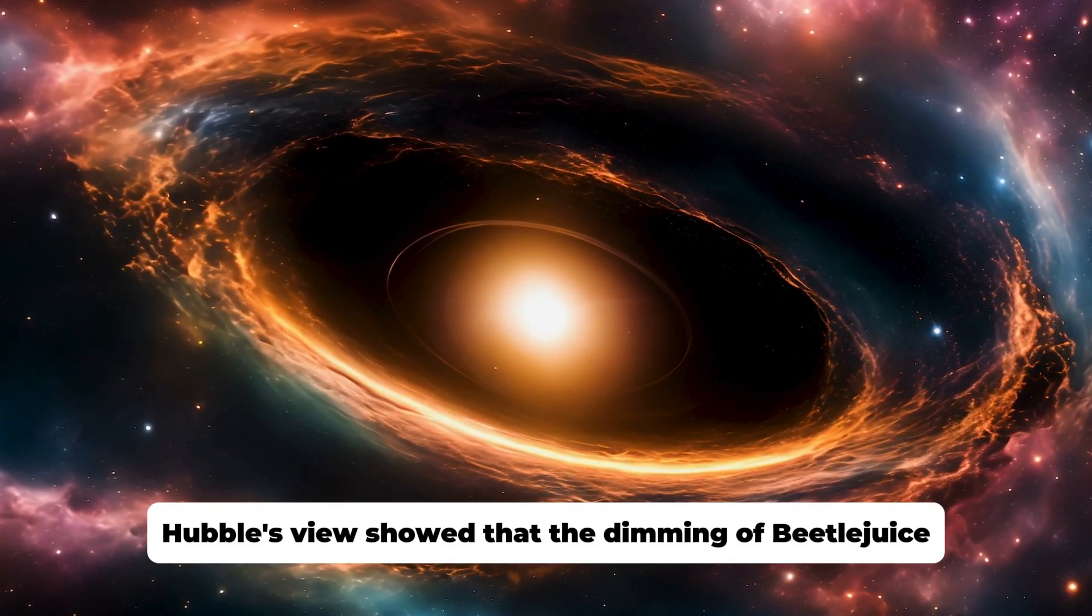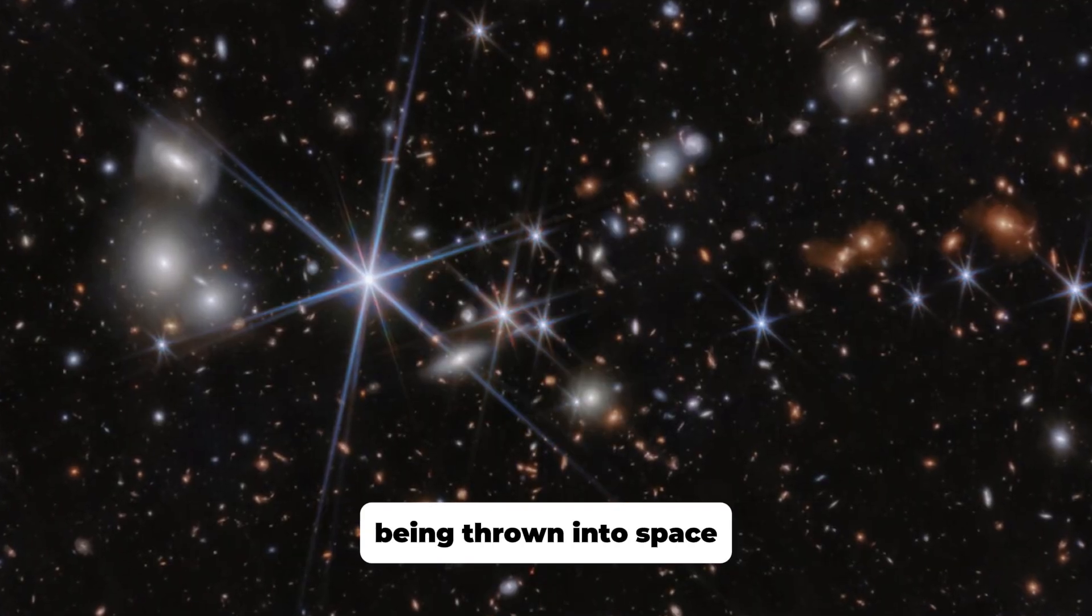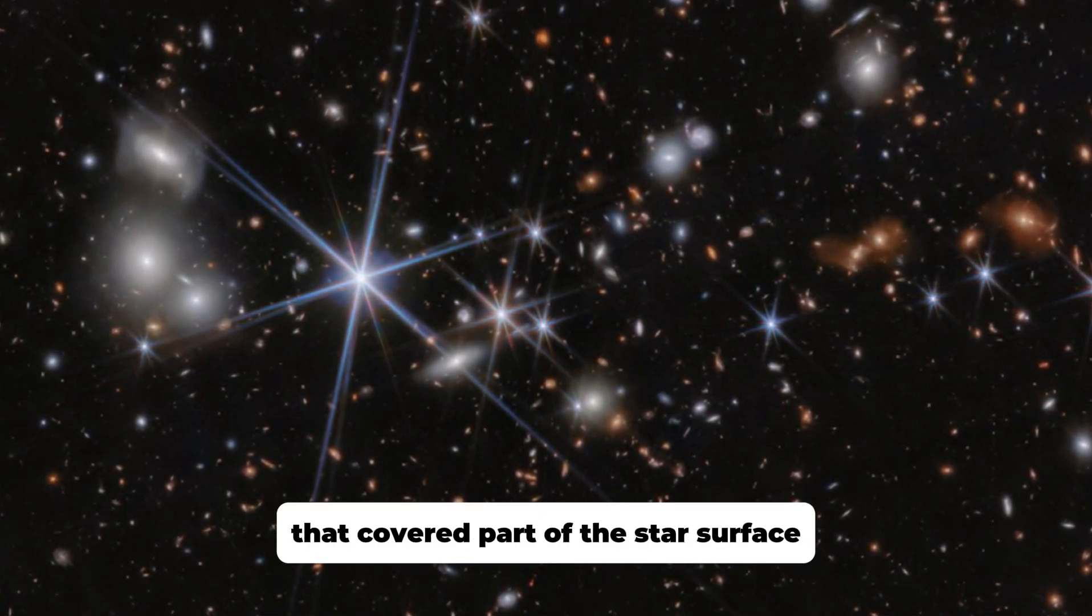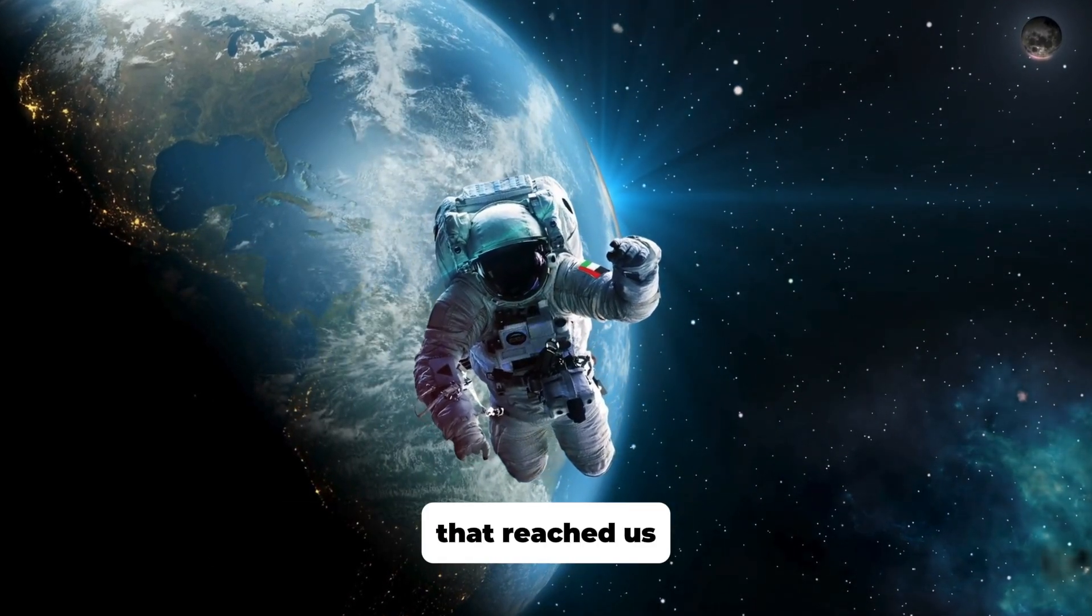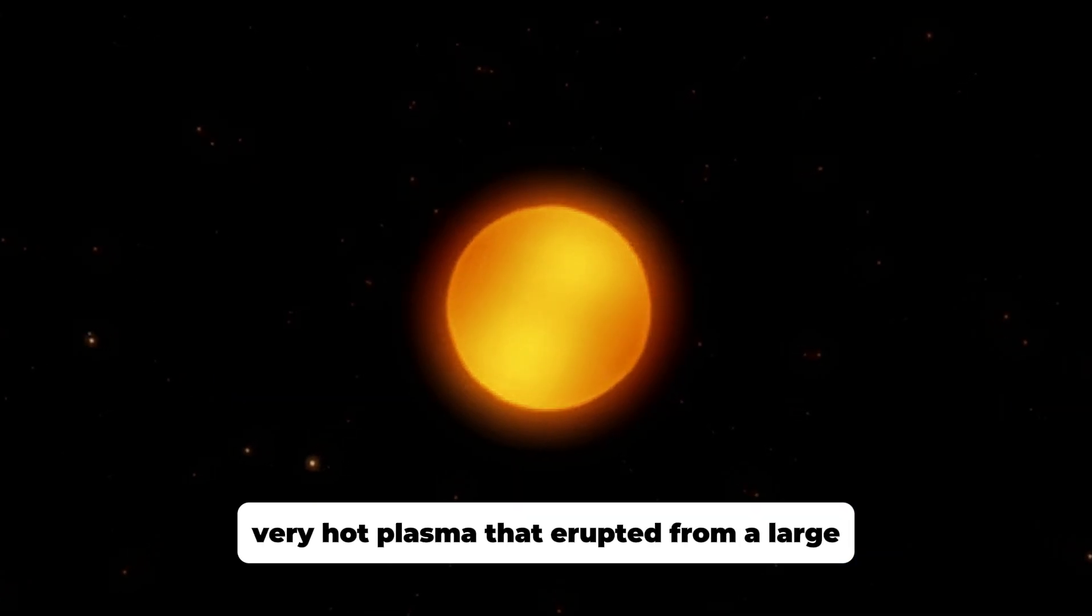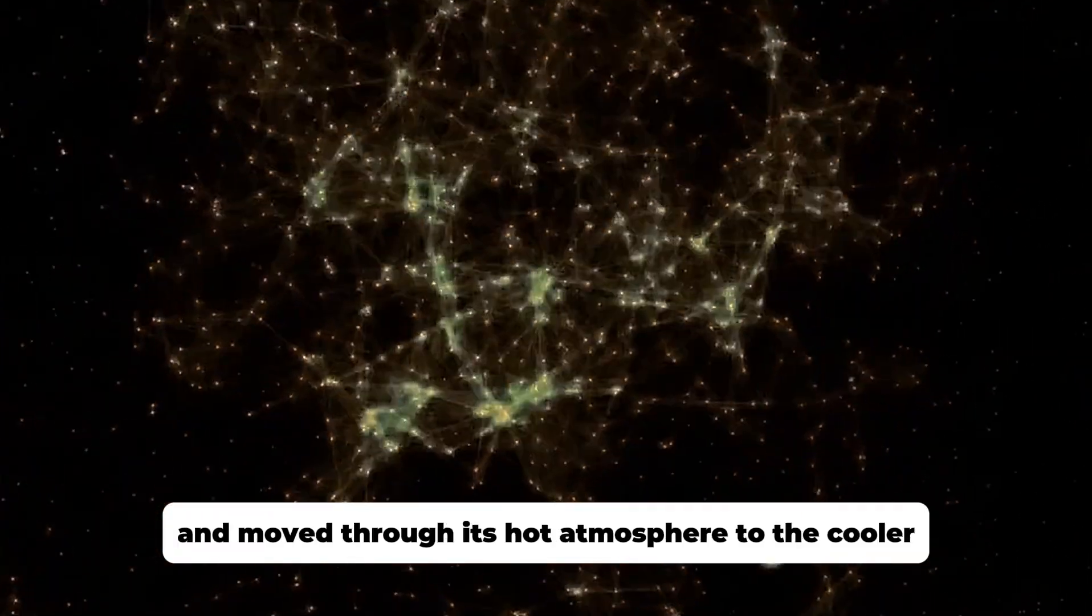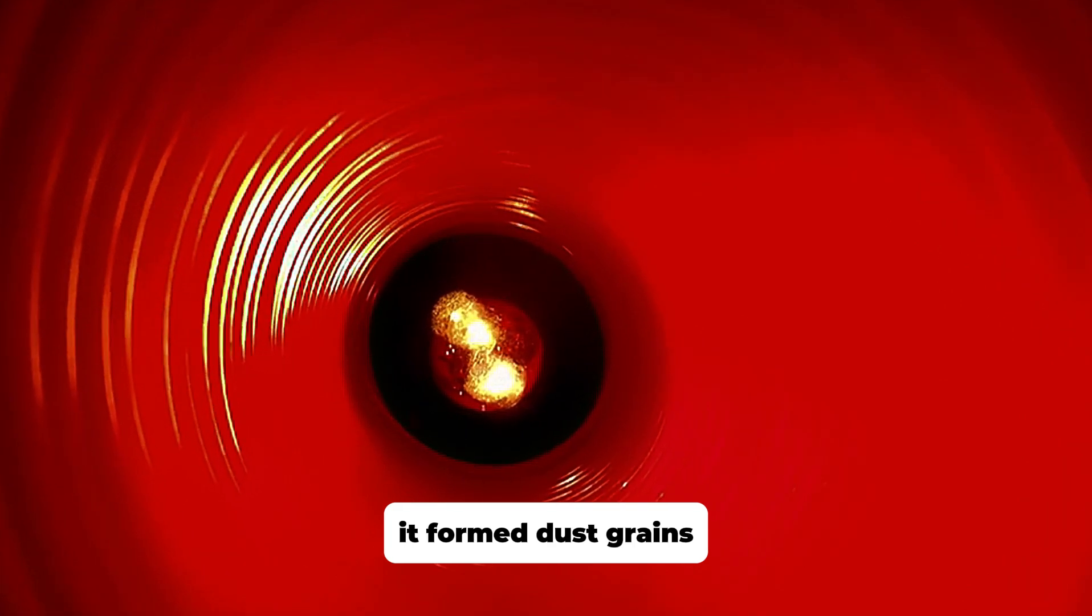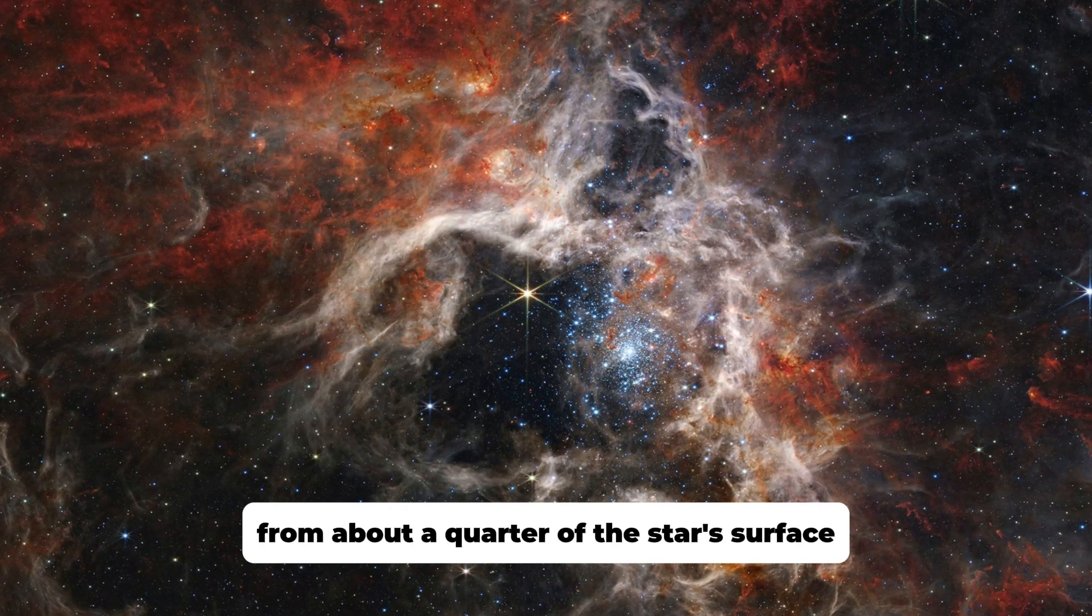Hubble's views showed that the dimming of Betelgeuse was probably due to a large amount of hot matter being thrown into space. This material formed a cloud of dust that covered part of the star's surface, reducing the amount of light from Betelgeuse that reached us. It was thought that the dust cloud was made of very hot plasma that erupted from a large convection cell on the star's surface and moved through its hot atmosphere to the cooler outer layers. As it cooled, it formed dust grains.